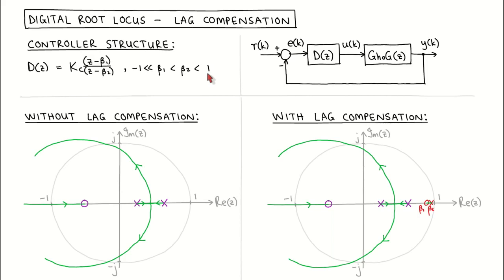To understand what this means, let's look at the digital control system configuration. The digital controller calculates the plant input, where we use the discrete equivalent plant model in this configuration. The plant output is subtracted from the reference input to form the error signal, which is the input to the controller. For the steady state response we are interested in the steady state value of the error signal in response to a certain reference input signal.